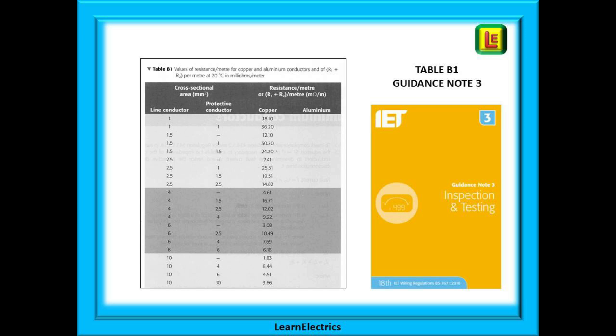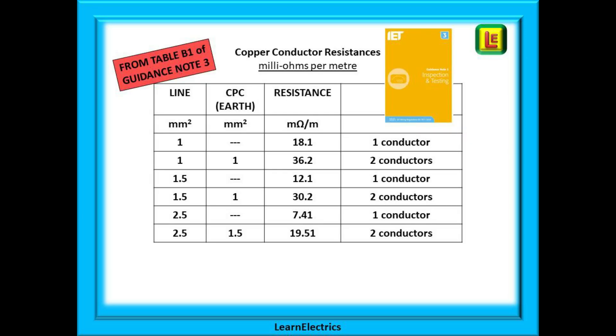Table B1 shown here lists various combinations of standard conductor sizes. We have reproduced part of table B1 here to make it easier to read. Starting at the top, if we had a single cable of size 1 millimeter, the table tells us that its resistance would be 18.1 milliohms per meter length.